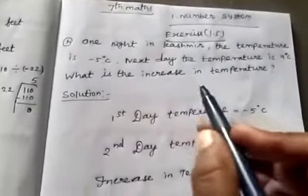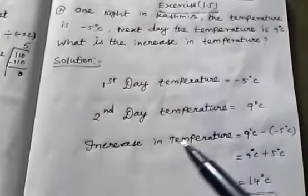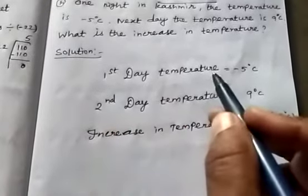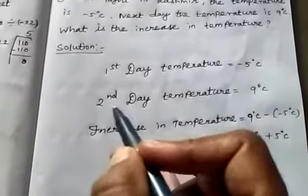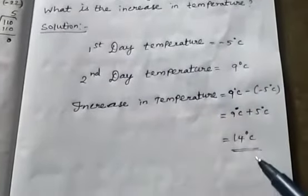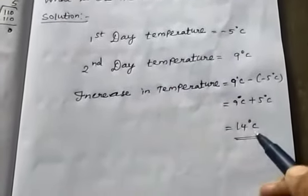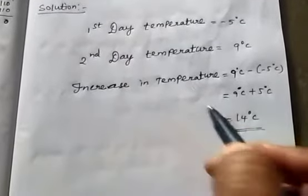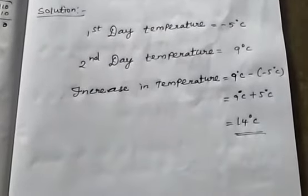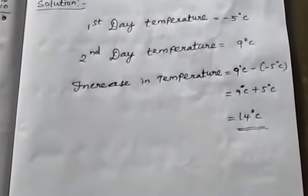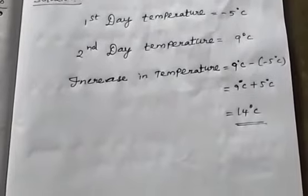In this question we subtract the first day temperature from the second day temperature, and then we get the increase in temperature. Next we see the second sum.